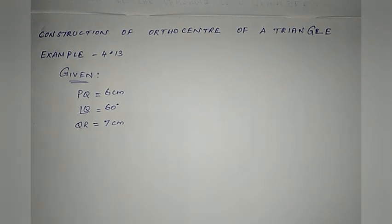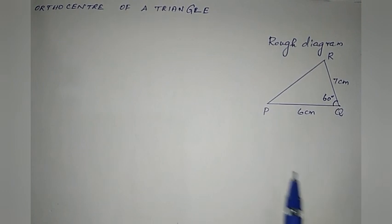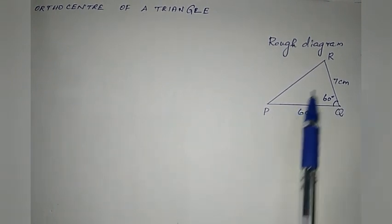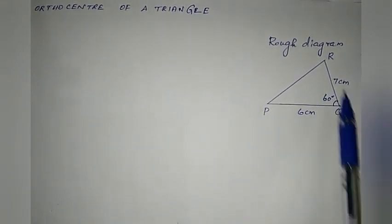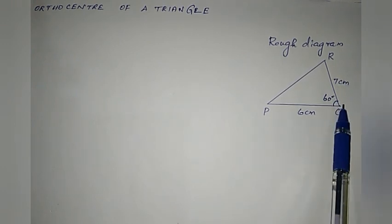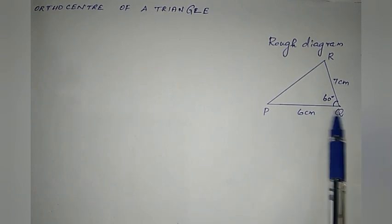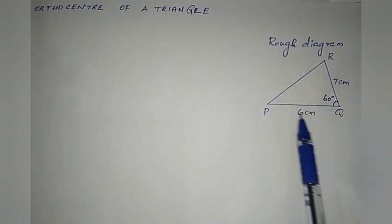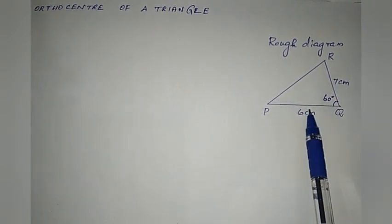We already know how to construct a triangle. First we will draw the triangle, then draw the altitudes to find the orthocenter. We mark the measurements, draw a rough diagram first, then the original diagram.